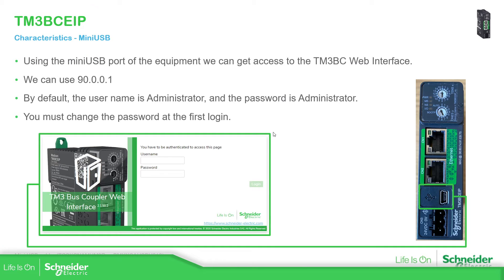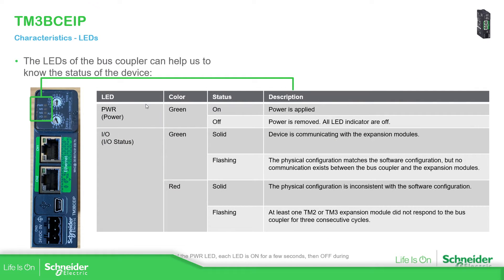As we saw in the past, we had the possibility to use the mini-USB of the Bass Coupler in order to open the Bass Coupler web interface. If we use this IP address in our browser, we should be able to access the web interface. You should use the administrator username and password, and then you must change the password. Once you are with the Bass Coupler, on the left part you have four LEDs. These LEDs give us information: if you have the power supply, this one will be on, and if you have something regarding the I/Os — the TM3 modules that come next to the Bass Coupler — you should check the I/O status LEDs. If everything is working fine, the green should be on. This is how you can identify where the problem is.